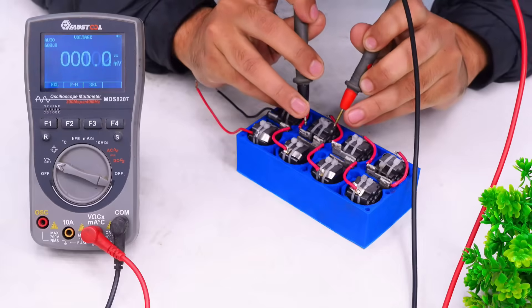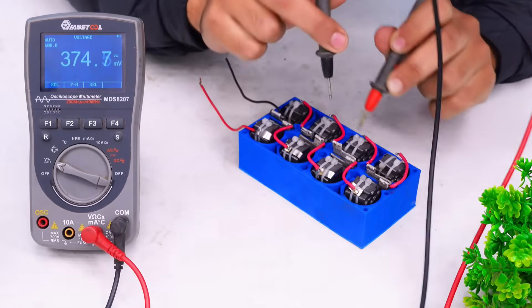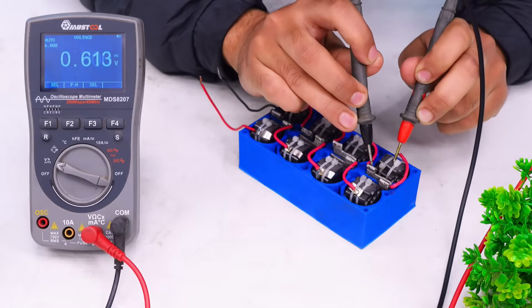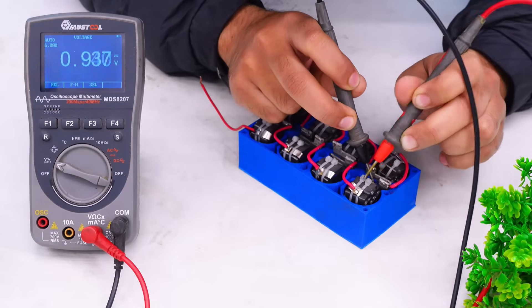Moving on to the next one. And here we have around 373 millivolts. Next 1.11 volts. 600 millivolts. Yeah around 1 volt. Next.